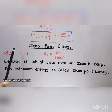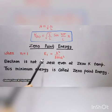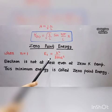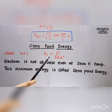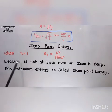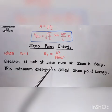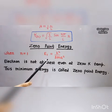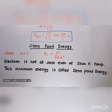Another important point is zero point energy. When n equal to 1, E₁ equal to h squared divided by 8 m l squared. This is the minimum energy state of the electron. The electron is not at rest even at 0 Kelvin temperature. This minimum energy is called zero point energy.